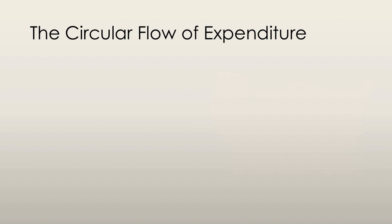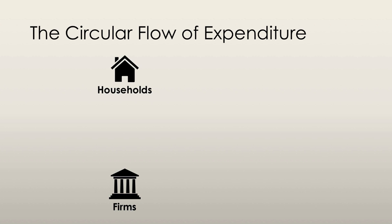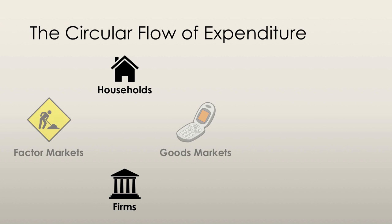Let's take a look at the circular flow of expenditure. There are two main institutions that make up the domestic circular flow: households and firms. They trade in two distinct markets — the factor markets and the goods markets. The factor markets include land, labor, capital, and entrepreneurship that households provide to firms. The goods market consists of all the goods and services that firms sell to households.